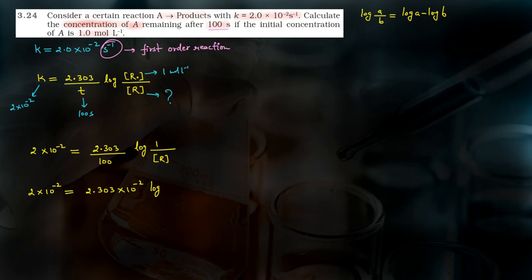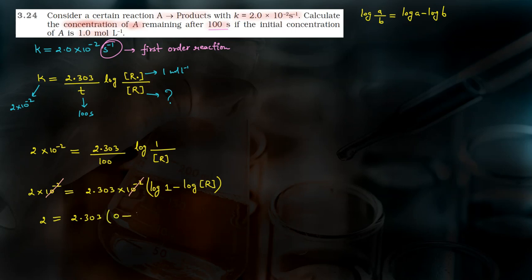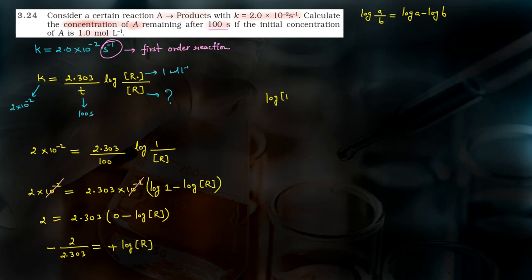Now, log of 1 by R expands to log 1 minus log R. The 10 to the power minus 2 on both sides cancels. And the value of log 1 is 0. So what remains is: 2 equals 2.303 times (0 minus log of concentration R). To find log R: 2 divided by 2.303 equals minus log R. Moving the minus sign, log R equals minus of 2 divided by 2.303.